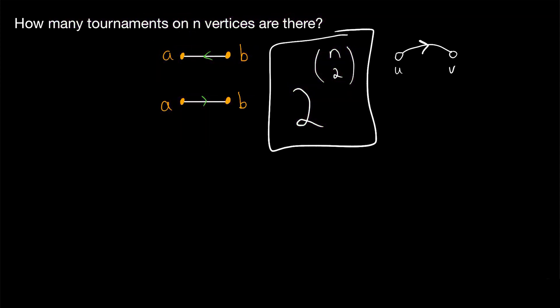As an example, how many labeled tournaments are there on 4 vertices? On 4 vertices there are 4 choose 2 edges, and for each edge we pick 1 of 2 directions. So the answer is 2 to the power of 4 choose 2. Since 4 choose 2 equals 6, this is 2 to the power of 6, which is 64 — quite a few tournaments.